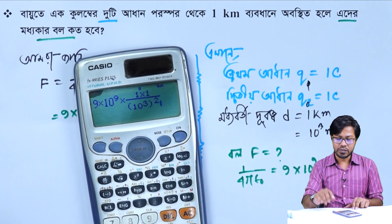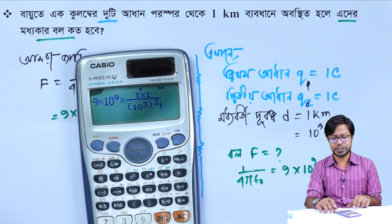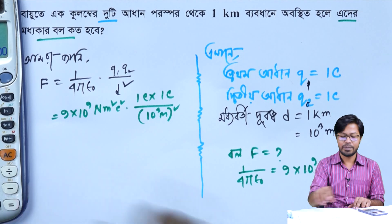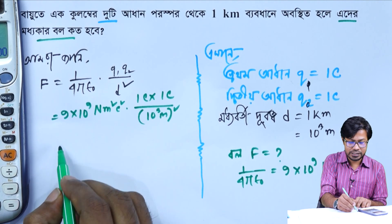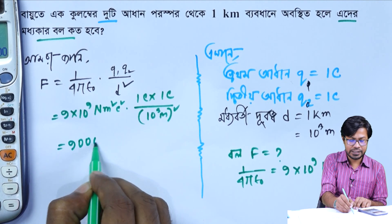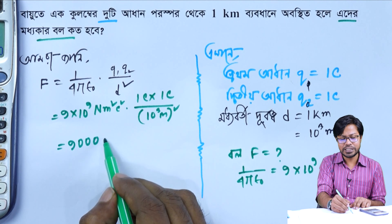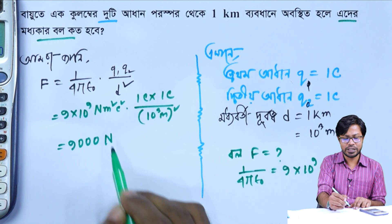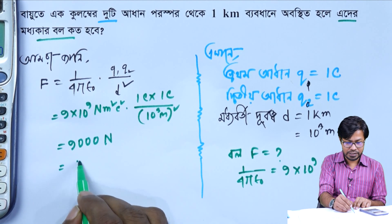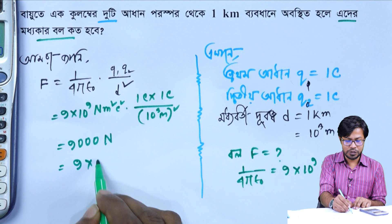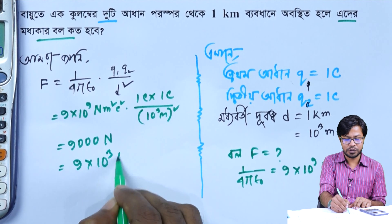If you see this one, it is equal to 10 to the power 10 cube meter square. The answer is equal to 3 squared. If you write the ball as Newton, you will write Newton. It's 9 into 10 to the power 10 cubed Newton.